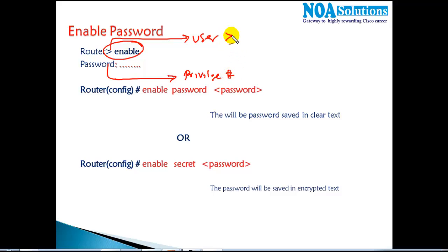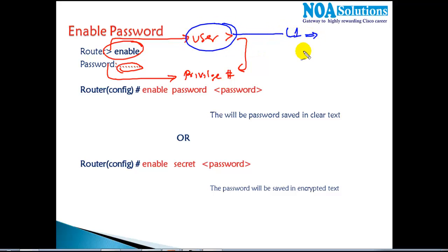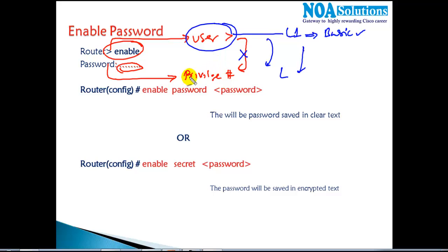When anyone tries to go to the next mode, I want my router to prompt for a password. If the password is correct, only then the user can go to privilege mode. In production networks, level-one junior engineers work at the user level with basic access. I want to restrict them there and not allow them to verify all configurations, so I configure an enable password to control access to the hash mode.